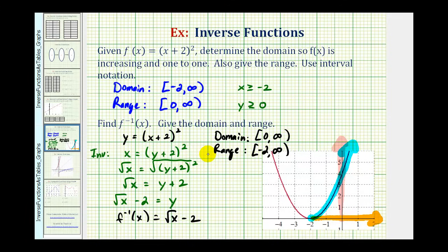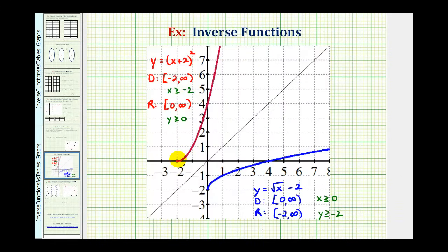Let's go ahead and finish by verifying this graphically. We know that if we graph function f on the restricted domain, and we graph the inverse function on its domain, the two functions should be symmetrical across the line y equals x. And here's the graph of the inverse function graphed over its domain. And we can see that these two graphs are symmetrical across the line y equals x.